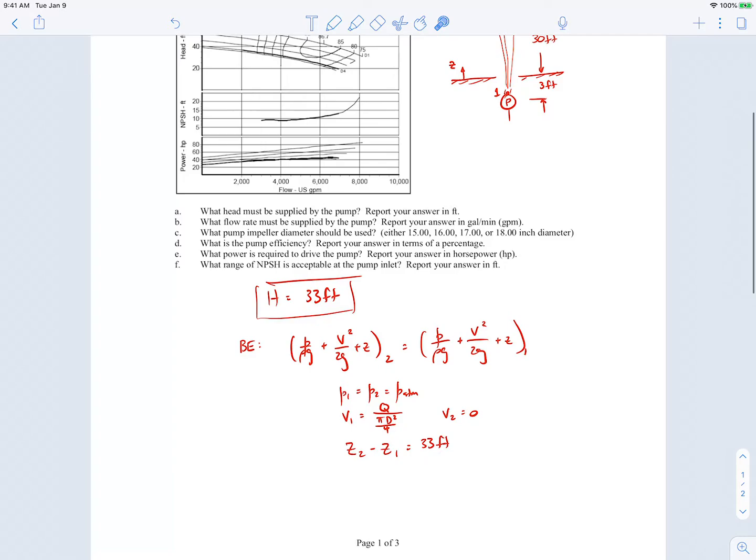So we can solve then for V1. When you solve the Bernoulli's equation, it'll end up looking like the following. And we can plug in the numbers to get V1: 46.1 feet per second. Excuse me, I just sneezed. My allergies are acting up.